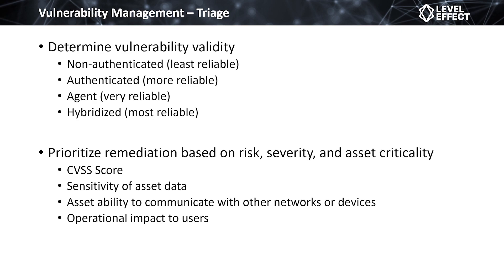A unique factor is the ability of an asset to communicate with other networks or devices. We might have a cloud asset that can only talk to other systems within that network, making it very hard to communicate outside. So even if we have a valid, high-severity exploit on that asset, it can't reach the internet. When comparing two CVSS score 10s, we obviously want to triage and remediate the one that is internet-accessible first.